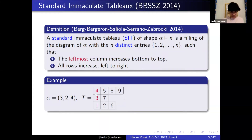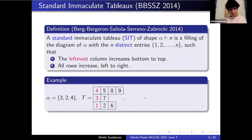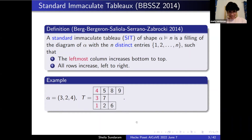Here's an example. The first column is strictly increasing. The other columns can do anything they want, but the rows always have to be increasing. This is my favorite object in this talk.